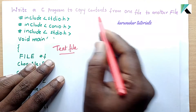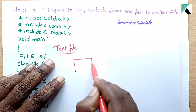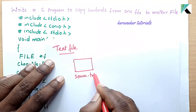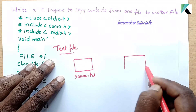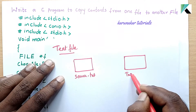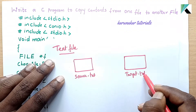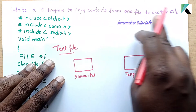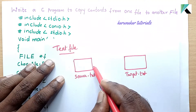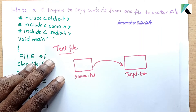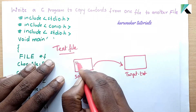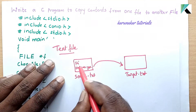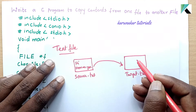Observe that one file has content. I will show you the files: source.txt and target.txt. The source file contains text — for example, 'Hi, how are you?' — and the target file is where contents will be copied to.